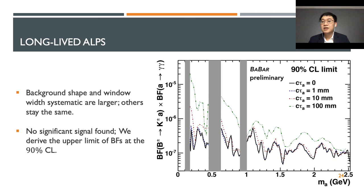There is unfortunately no significant signal found, so we derive the branching fraction limit at 90% confidence level as shown in the figures. At short lifetime from 1 to 10 mm, the difference is not much. However, at longer lifetime like 100 mm, we can see a very clear difference.